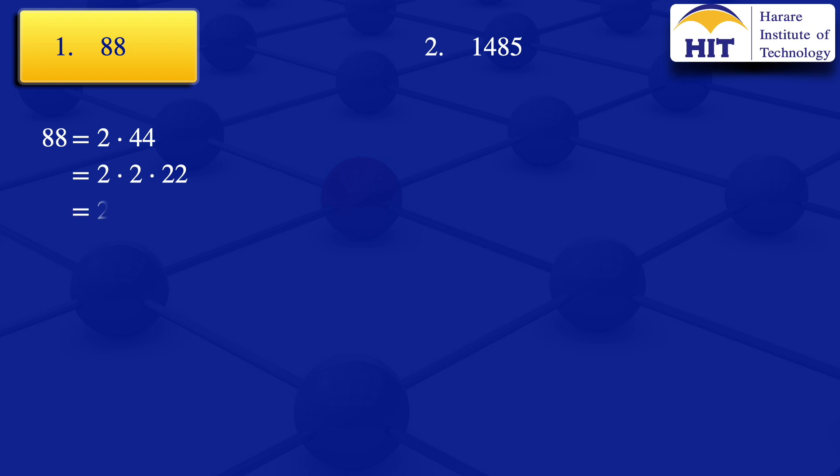We therefore write our expression as 2 × 2 × 2 × 11. The 11 is a prime number, so we can't factor it further. That is the prime factorization of 88, which we can rewrite as 2 to the power 3 times 11. So the prime factorization of 88 is 2³ × 11.